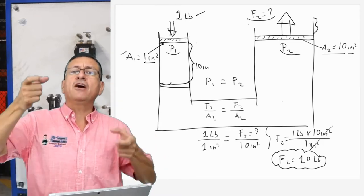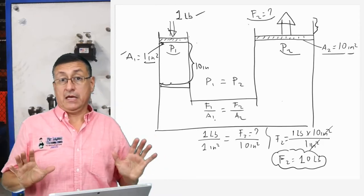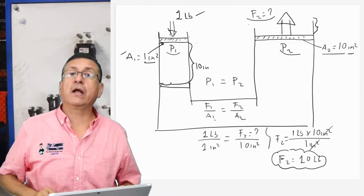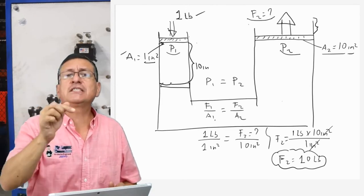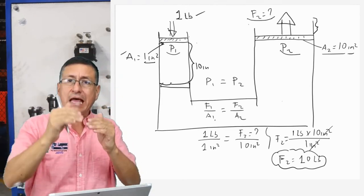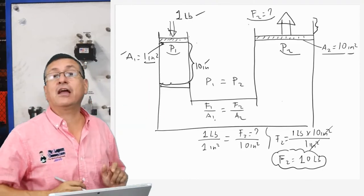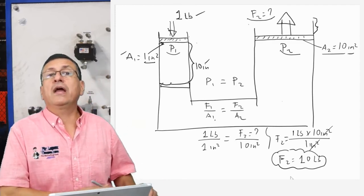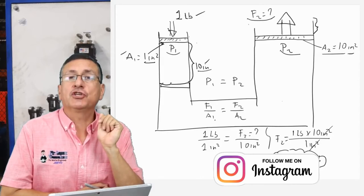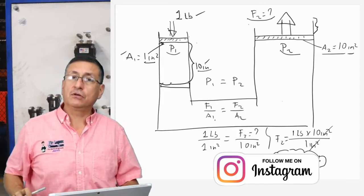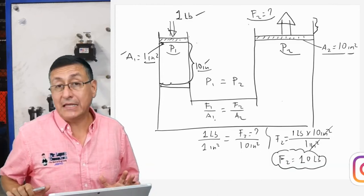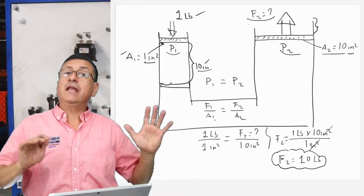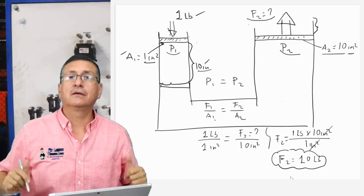But what happened with the movement of the pistons in this particular example? We said that we are going to apply a force of one pound in position number one and move piston number one ten inches down. Now we are going to calculate how much the second cylinder moves up. We calculated previously that the output force is ten pounds. Now we are going to calculate what distance the second piston moves. To calculate the output force we used the concept that what stays constant is the pressure. Now we use the concept that the work is constant.